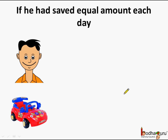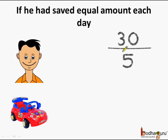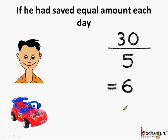Now, if he had saved an equal amount each day, what would it be? It would be 30 divided by 5, which is equal to 6. So if he was saving an equal amount each day, he would have saved rupees 6 to make it 30 in 5 days.